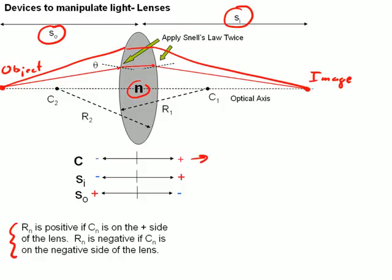R2 happens to be a negative number because C2 is on the negative side of the lens over to the left. The image distance SI is positive if the image is on the right side of the lens, but the image distance is negative if the image is on the left side of the lens.